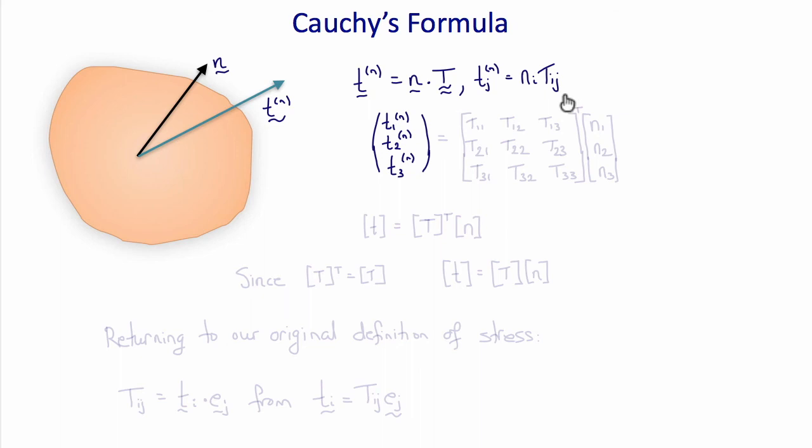If we were to write this out in matrix notation, we would say that the three components of the traction vector acting on the unit surface with unit normal n is equal to the nine components of the stress tensor times the unit normal vector.